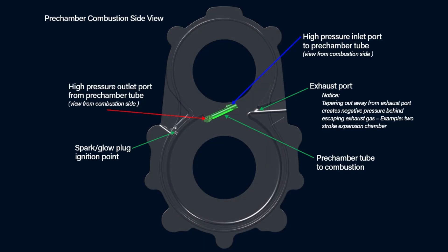Next, we have the pre-chamber combustion side view, beginning with the spark or glow plug ignition point. Then the high-pressure outlet port from pre-chamber tube, with view from combustion side.